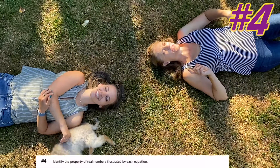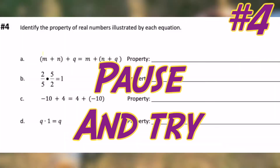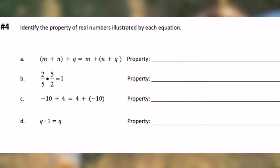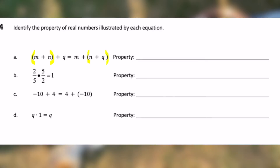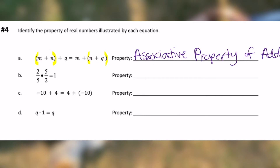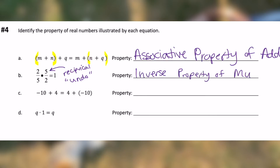I have a little test — let's give this a try. Using the properties of real numbers we just went over, pause and give this a try and see if you can identify what property is being demonstrated in each example. Let's check your work. Looking at the first one, the only thing that changed from the left side to the right side of the equal sign is the parentheses — the association. The order of the letters is still the same, so this has to be associative property of addition. The next one: two-fifths is being multiplied by its reciprocal — two-fifths times five-halves equals one, so this has to be the inverse property of multiplication.